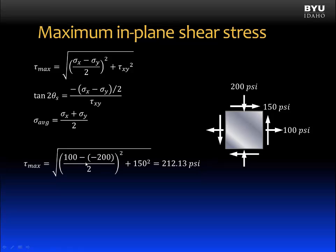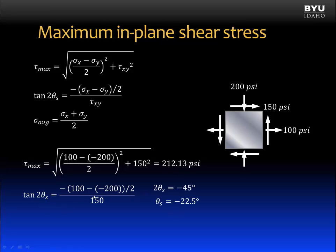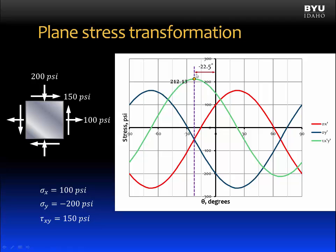Using the same example element, we calculate the maximum in-plane shear stress by plugging in sigma x equal to 100 psi, sigma y equal to negative 200 psi, and tau xy equal to 150 psi, giving the maximum in-plane shear stress value. The angle theta s is calculated using its equation and equals negative 22.5 degrees for this element. The average normal stress is calculated as negative 50 psi. These are shown on the graph — the maximum in-plane shear stress point, theta s at negative 22.5 degrees, and the average normal stress where the red and blue lines cross.